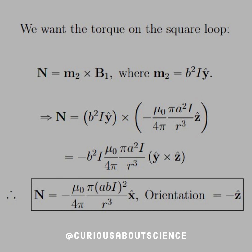Now we want the torque on the square loop, so we take M2 cross B1, where M2 is I B² ŷ, since B² is the vector area of the square loop and current I is pointing in the ŷ direction. Taking the cross product, we shuttle all the constants up front, and we're left with ŷ × ẑ, which by the cyclic permutation group goes to x̂. So the torque N equals −(μ₀/4π)(π A B I² / R³) x̂, with the equilibrium orientation in the negative ẑ direction — that's where the loop will rotate and settle.